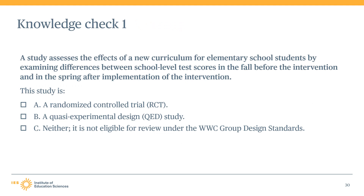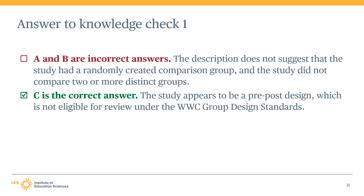Knowledge Check 1: A study assesses the effects of a new curriculum for elementary school students by examining differences between school level test scores in the fall before the intervention and in the spring after implementation. Is this study a randomized controlled trial, a quasi-experimental design study, or neither? The correct answer is C, neither. The study is ineligible for review under the WWC group design standards. There is only one group — the study examines scores of the same group in the fall and the spring. Without a distinct comparison group, normal maturation in the students might bias any impact estimates.